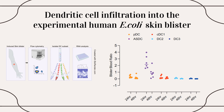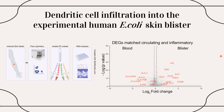It was possible to identify all DC populations in the blister by 24 hours. Curiously, we observed a considerable influx of ASDCs to the inflammatory site compared with their blood counterparts, suggesting a unique role of ASDCs as effector cells when recruited to the site of inflammation. Therefore, we compared the differentially expressed genes between blood and blister ASDCs, and as expected, identified several pro-inflammatory genes that were upregulated in the blister ASDCs.